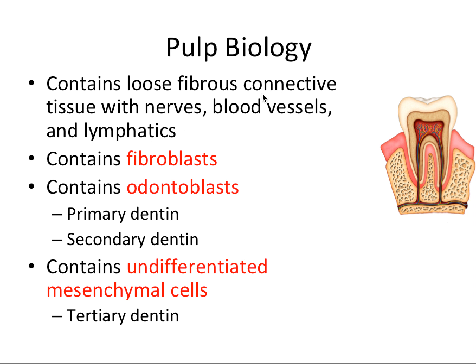The pulp contains loose fibrous connective tissue with nerves, blood vessels, and lymphatics. It contains fibroblasts, which secrete fibrous connective tissue. It also houses the odontoblasts, which secrete dentin. The type of dentin depends on the stage of root formation — it's considered primary dentin before root formation is complete, and secondary dentin after root formation is complete. But odontoblasts secrete both types of dentin.